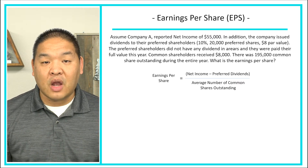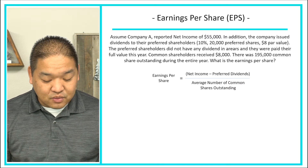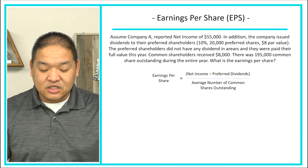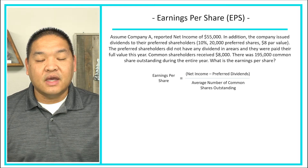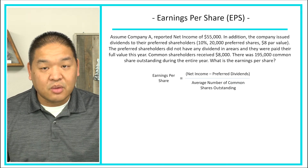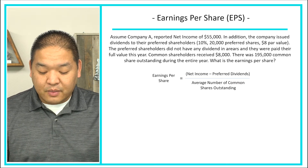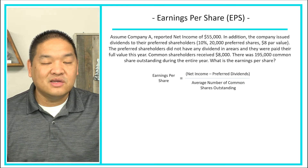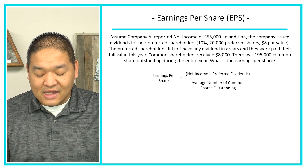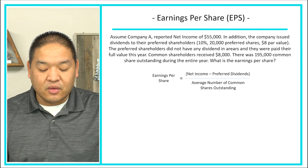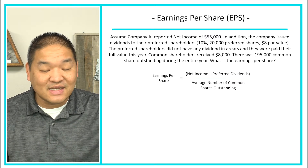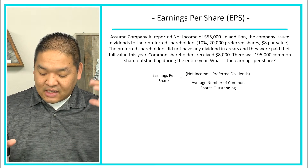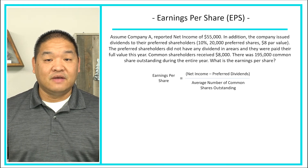This is a more involved problem, but we'll walk through it step by step. Assume Company A reported net income of $55,000. The company also issued dividends to preferred shareholders: 10% rate, 20,000 shares at $8 par value — so we'll need to calculate the preferred dividend. The preferred shareholders had no dividends in arrears and were paid their full value this year. Common shareholders received $8,000, and there were 195,000 common shares outstanding during the entire year.